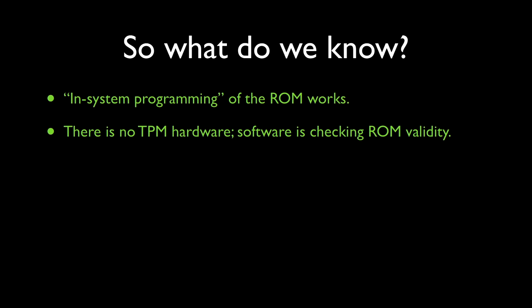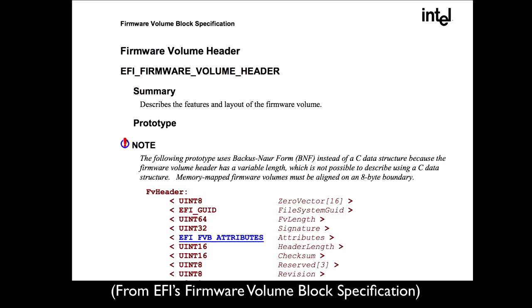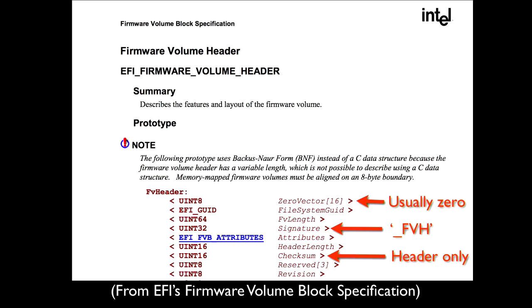As a quick recap: we can now reprogram the ROM with the in-system programming hardware, and we know there's no external hardware checking ROM validity. But something is checking the validity, and we need to find that code. To figure out how the ROM is organized, we can go to Intel's EFI specification for their firmware volume. It has a field labeled 'signature' — literally just the four characters underscore FVH. There's a checksum that only covers the header. There's also a 'zero vector' field which isn't really defined for what it's used for — we'll come back to that.